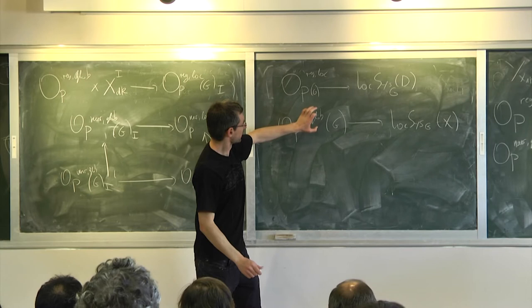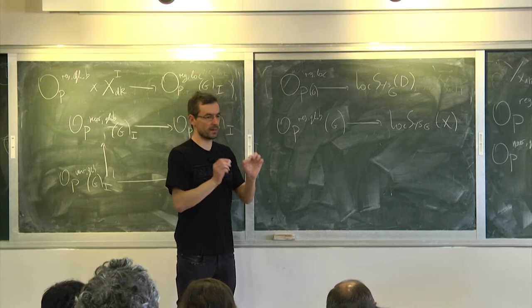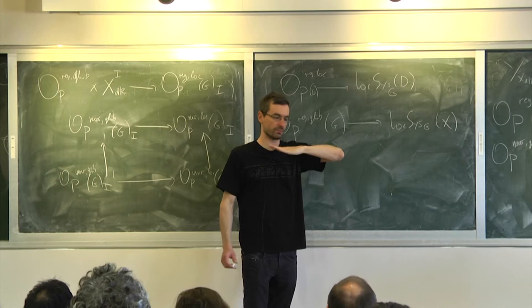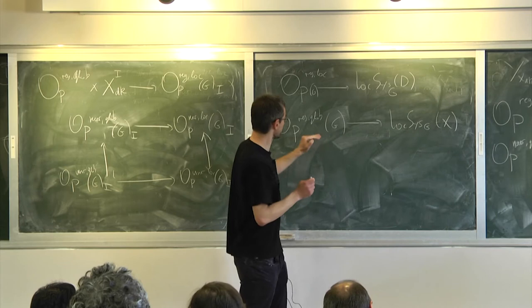Both of these are factorization spaces that are jets into something. In this case it's the D-scheme of opers; in this case it's the constant D-stack BG times X. You take horizontal sections of both and you get the map. That's kind of cheap.